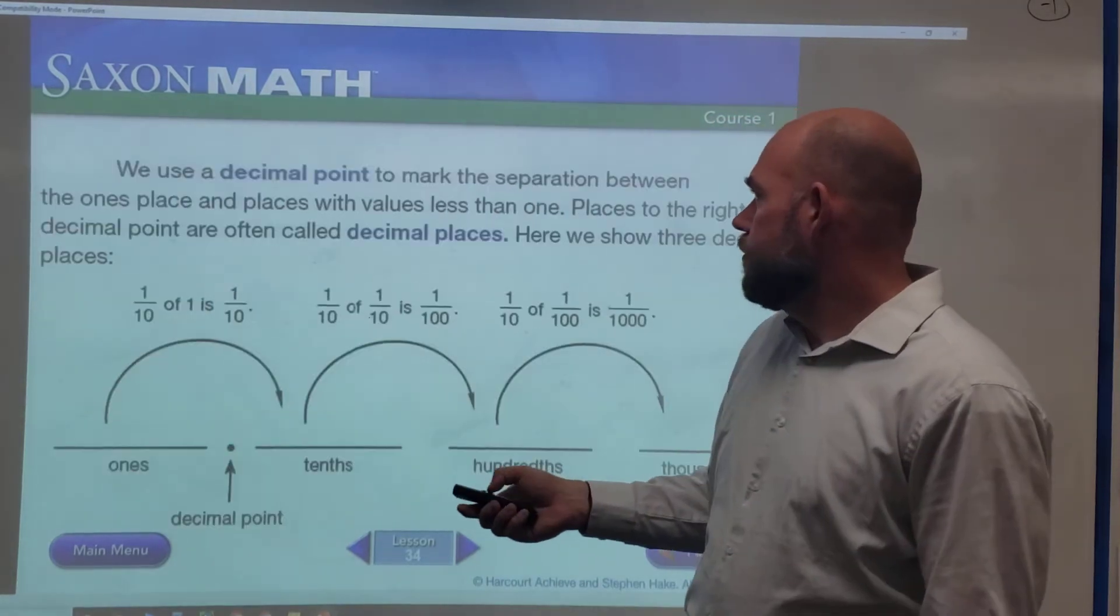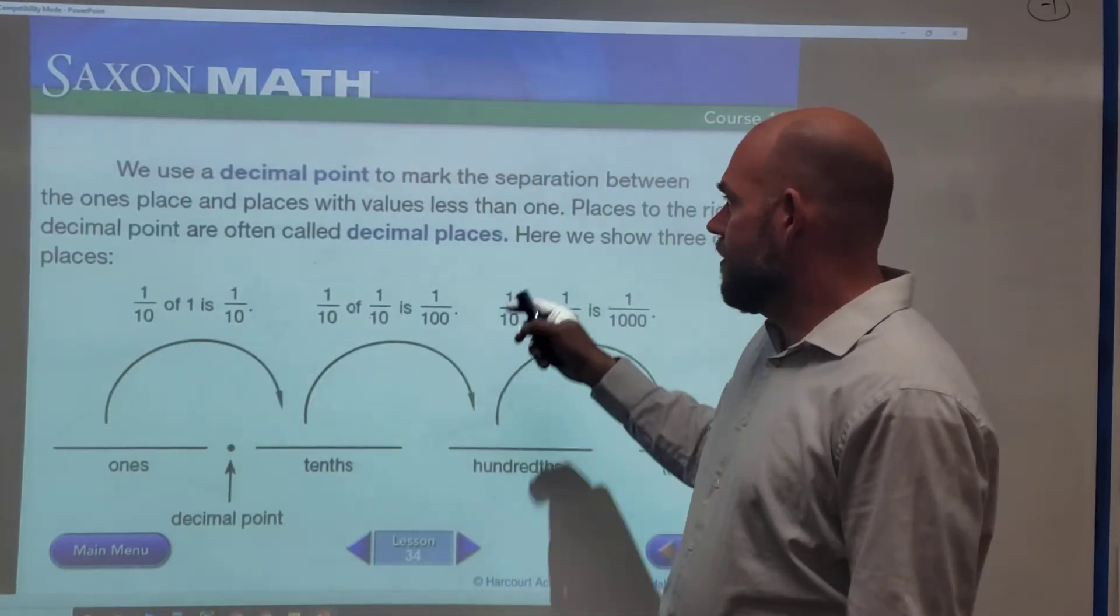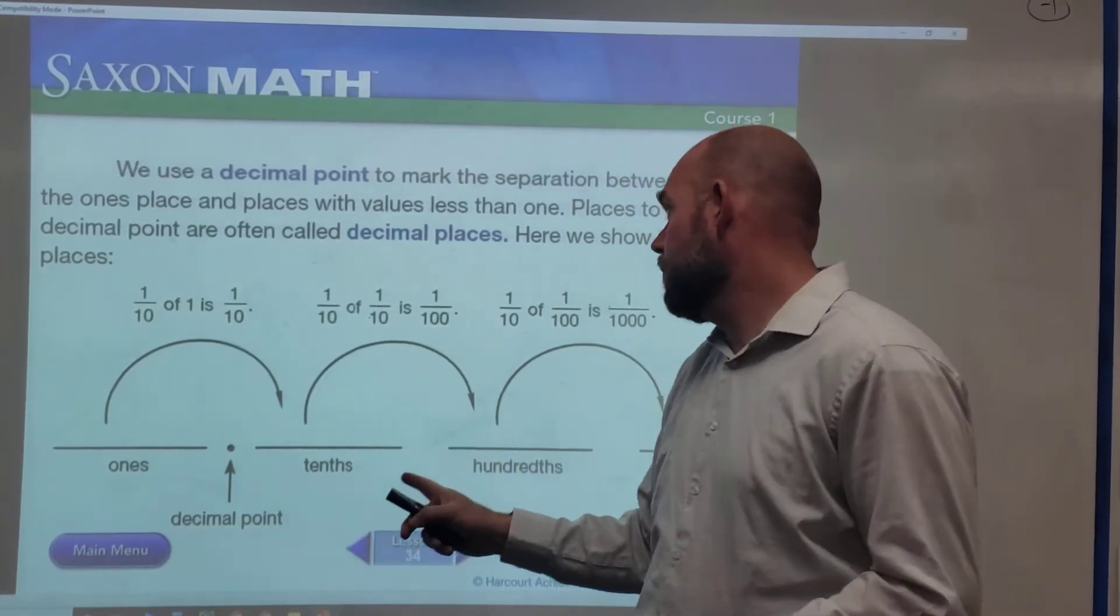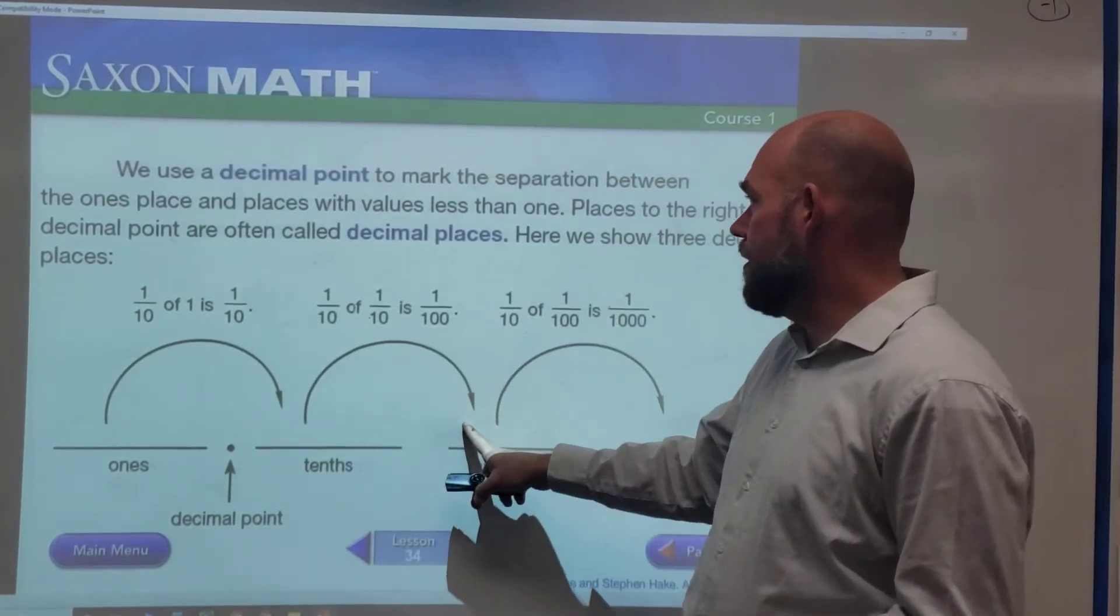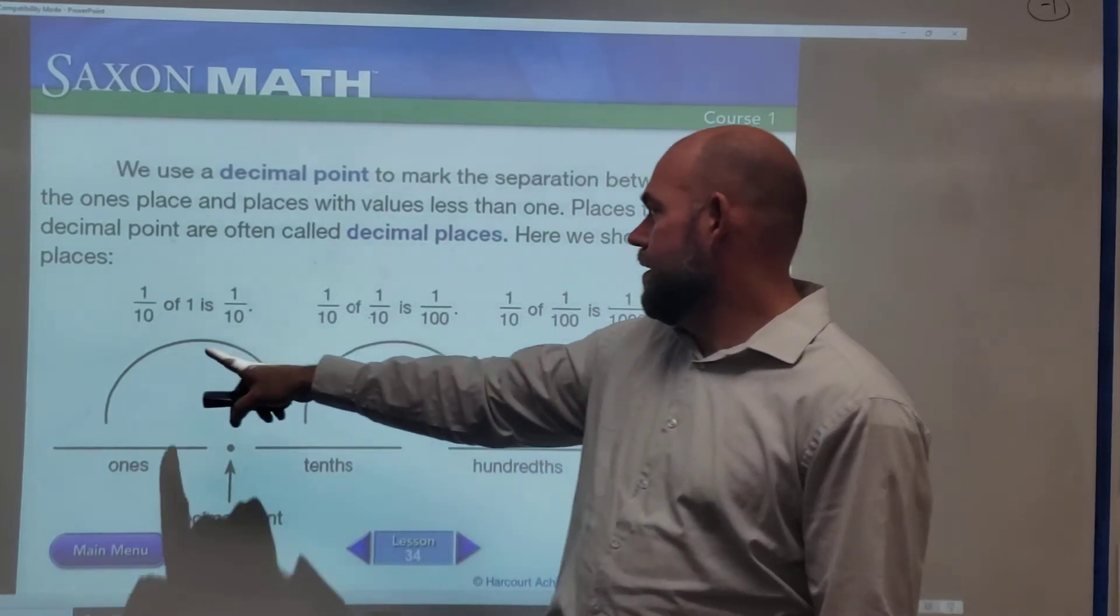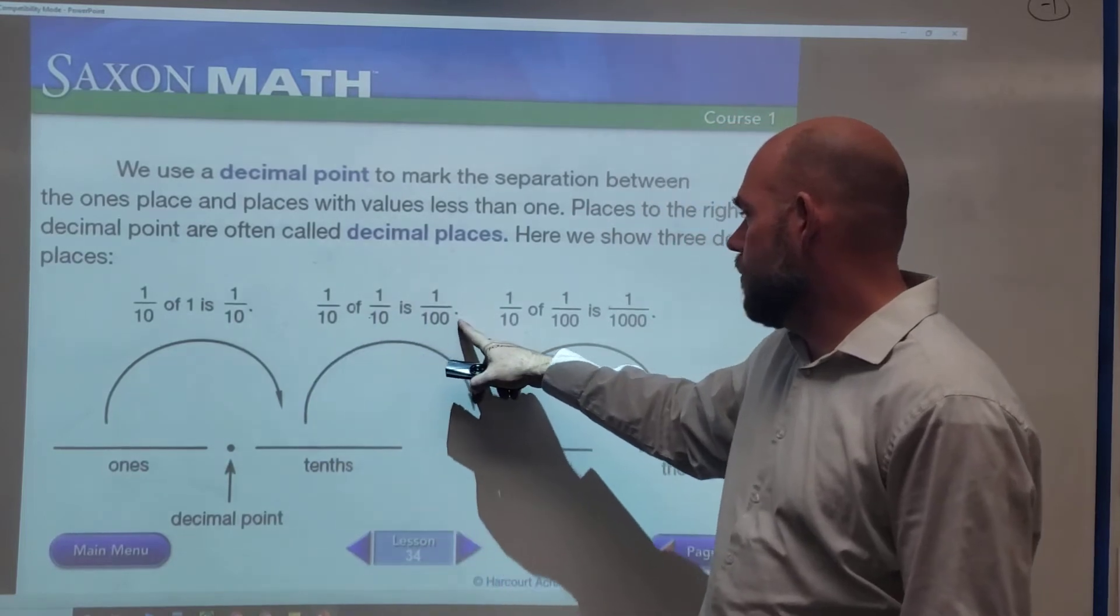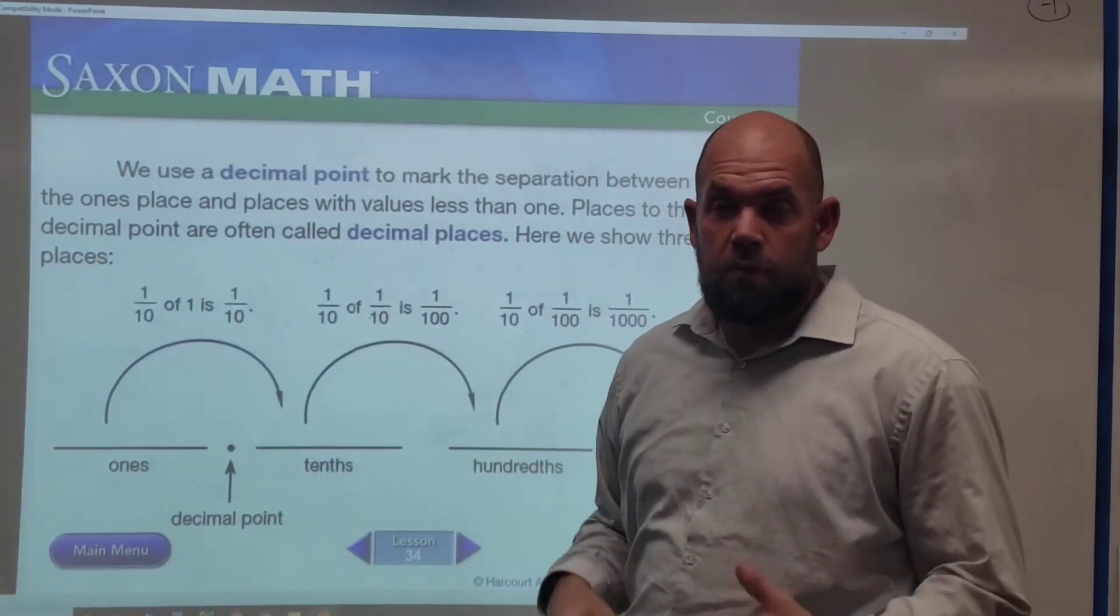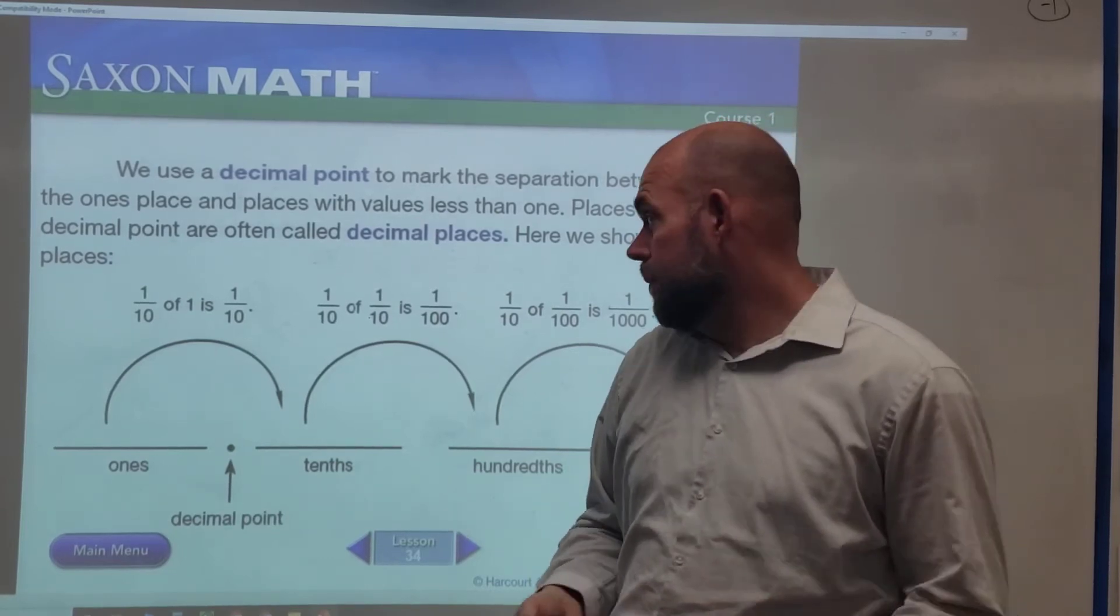We use a decimal point to mark the separation between the ones place and the places with values less than one. Places to the right of the decimal point are called decimal places. Here we show one-tenth of one is one-tenth, but one-tenth of one-tenth is one-hundredth. You'll notice the word 'of' here—we're familiar with this already—it means multiply.